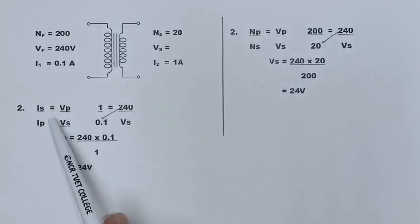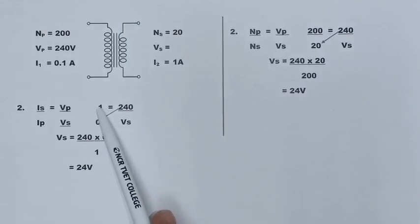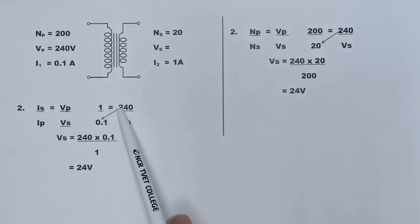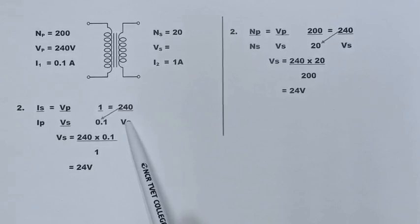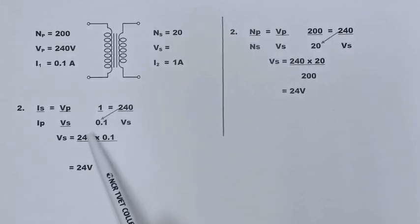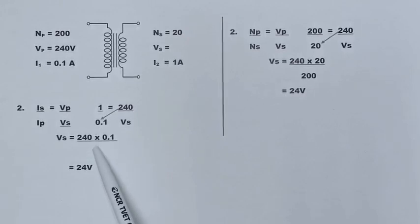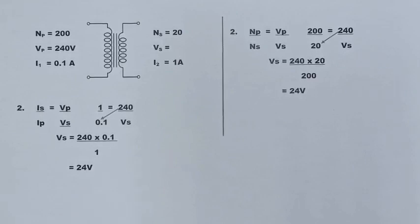We can verify using the current-to-voltage ratio: 1 over 0.1 equals 240 over Vs. Making Vs the subject and cross-multiplying: 240 multiplied by 0.1 divided by 1 gives us the same result — 24 volts. Both methods confirm the secondary voltage is 24 volts.